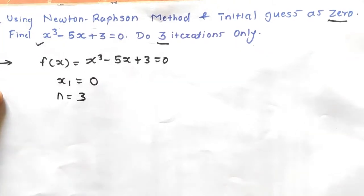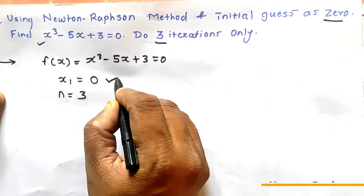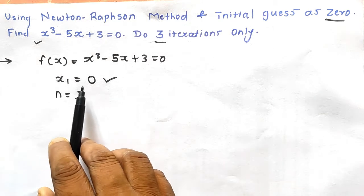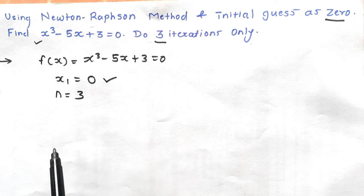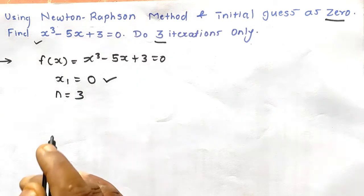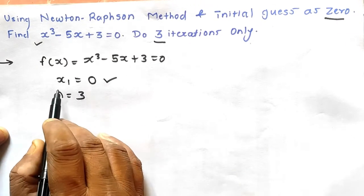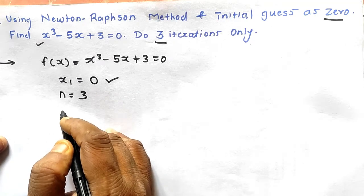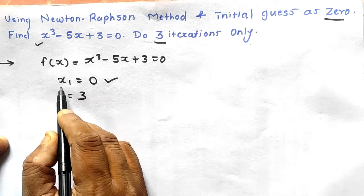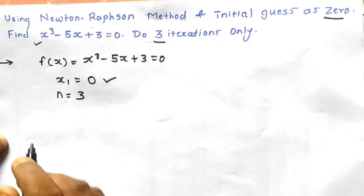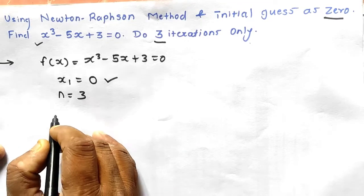In the Newton-Raphson method, only one initial guess is required. In this numerical, the initial guess is directly given as 0. If the initial guess is not given, then you have to assume it and verify whether it is right or wrong — there is a condition for that. Since x1 is directly given here, we should still know the condition for verification.